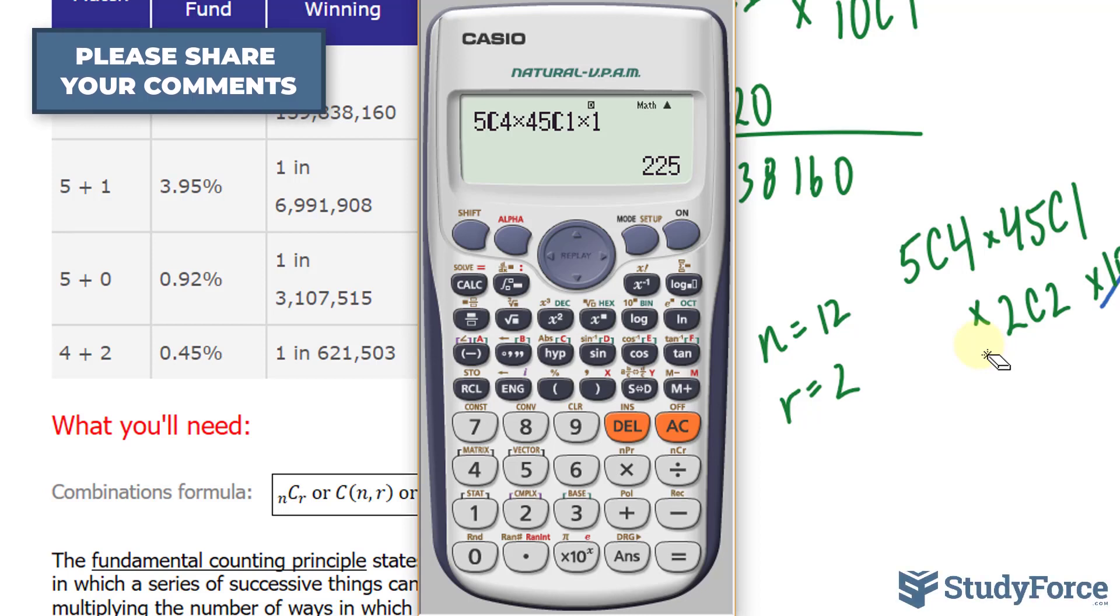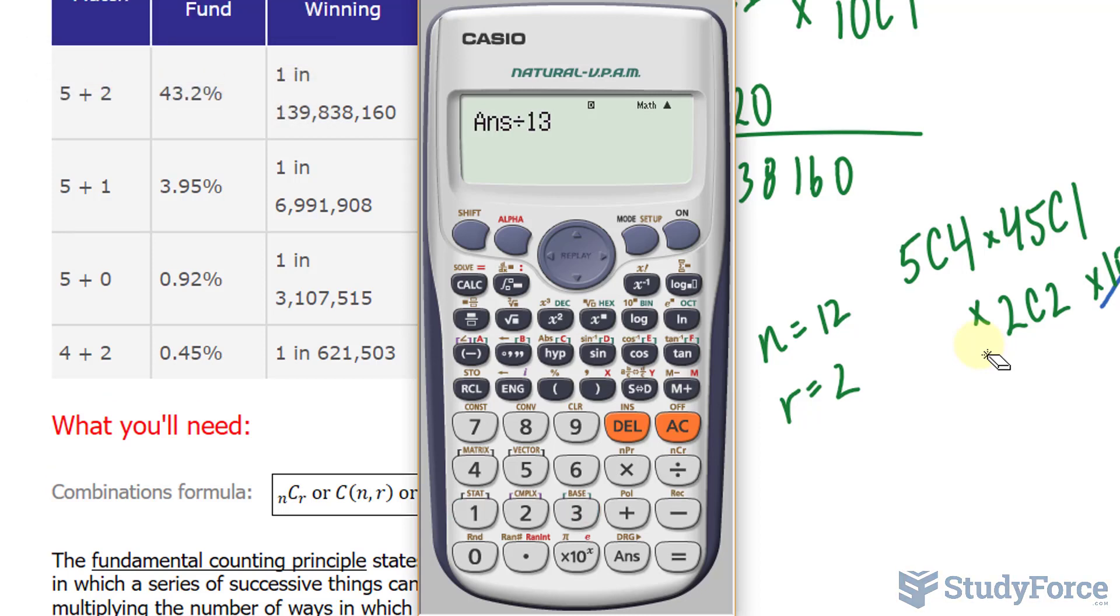And now we divide this by the total number of combinations, which is once again 139,838,160. We end up with this fraction, which is the same as 1.609 times 10 to the power of negative 6. Now they show 1 in 621,503. That's an estimate. So if I take 1 divided by 621,503, that's identical to what I got before. And there you have it.